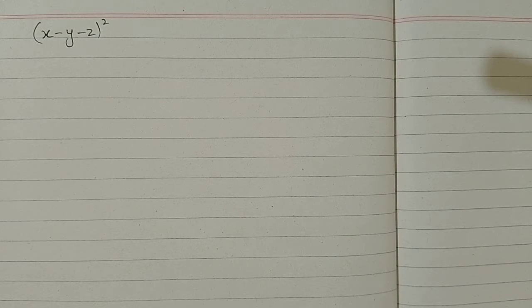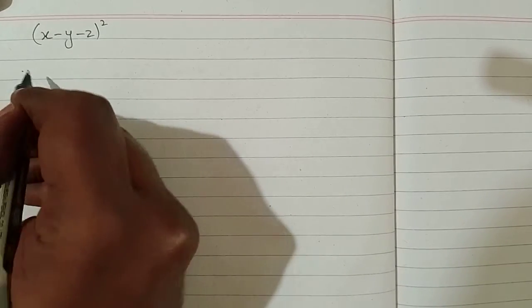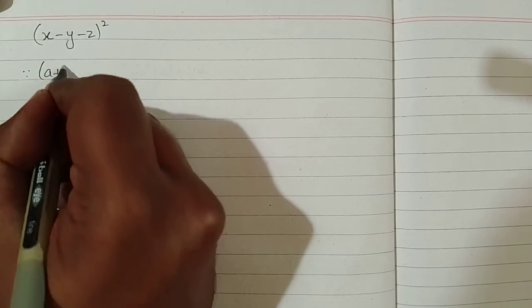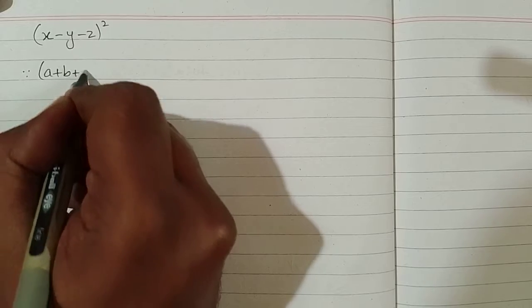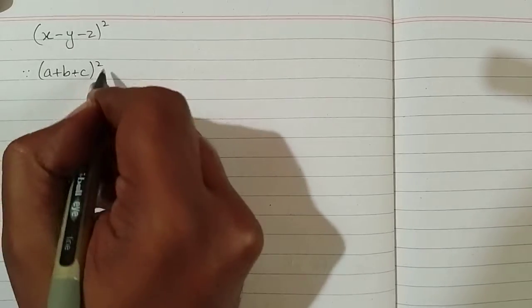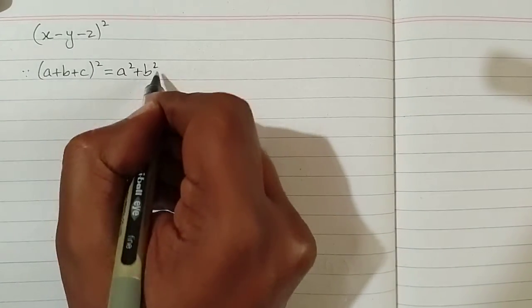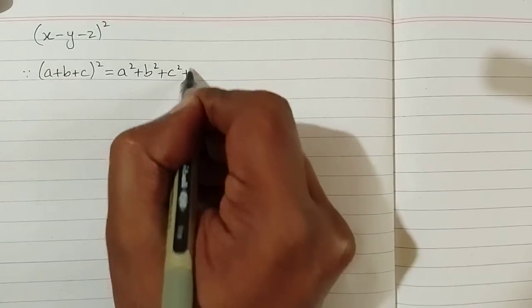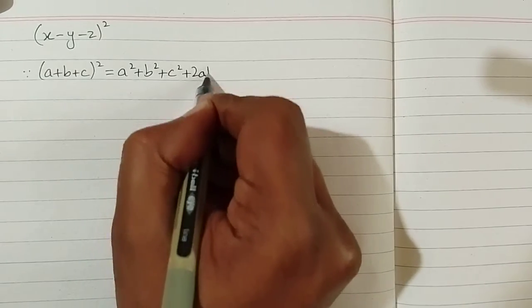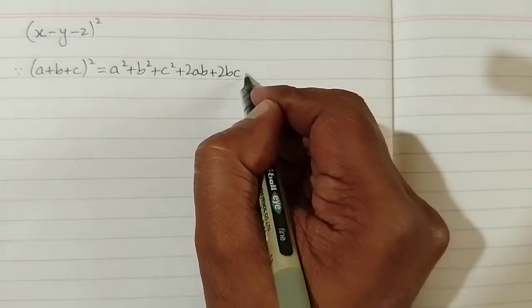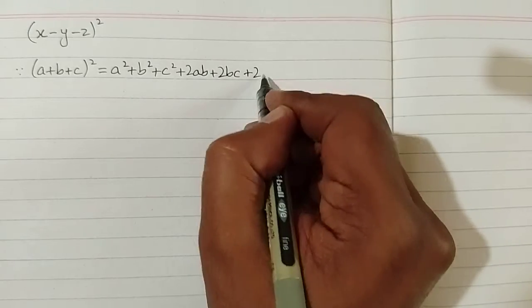In this video we will find the square of x minus y minus z. We can use the algebraic identity which is a plus b plus c whole square is equal to a square plus b square plus c square plus 2ab plus 2bc plus 2ca.